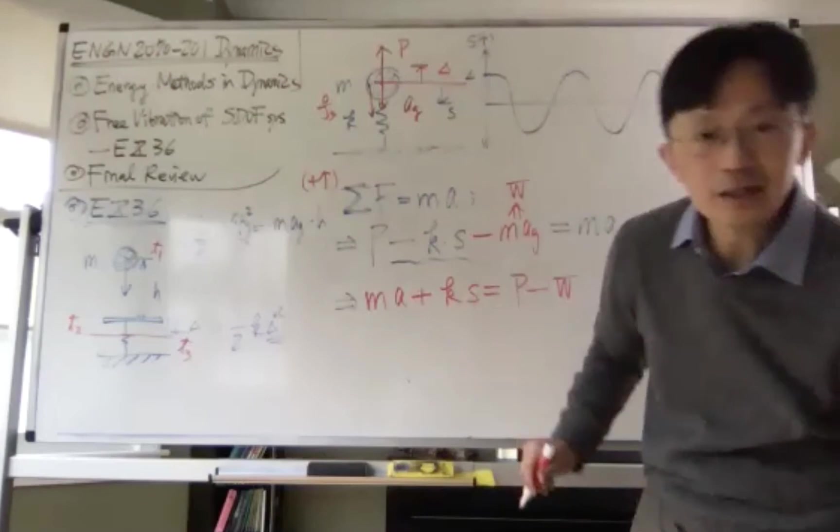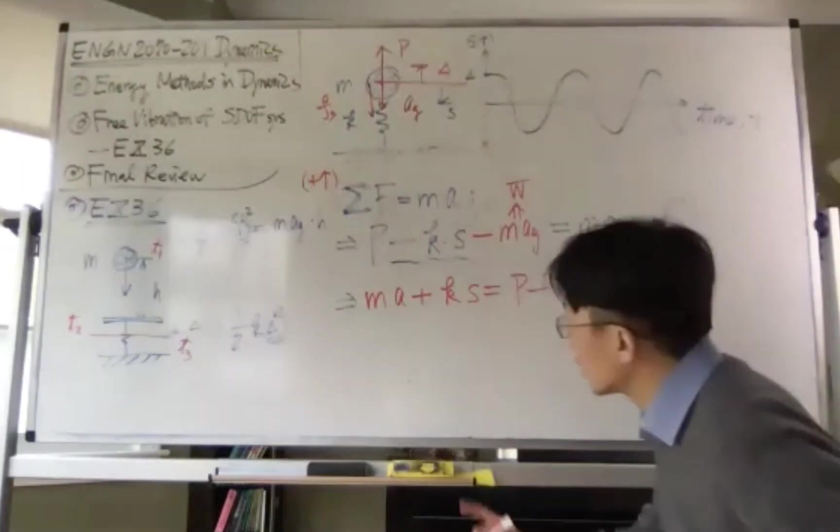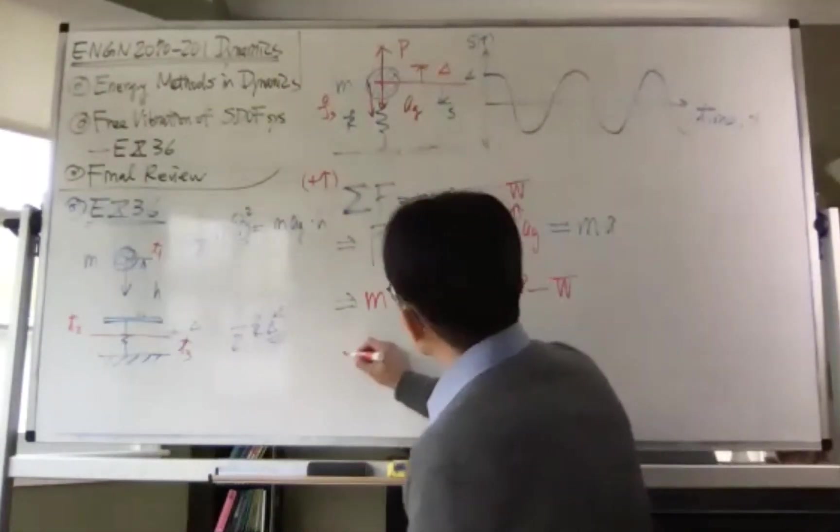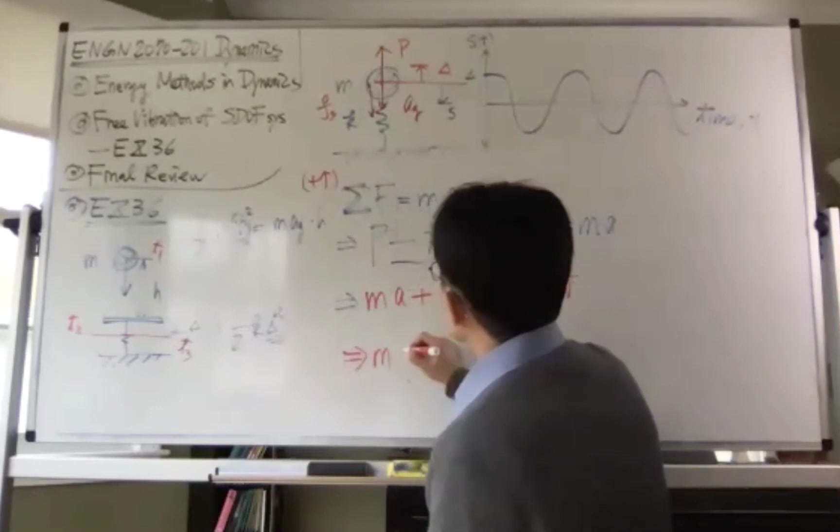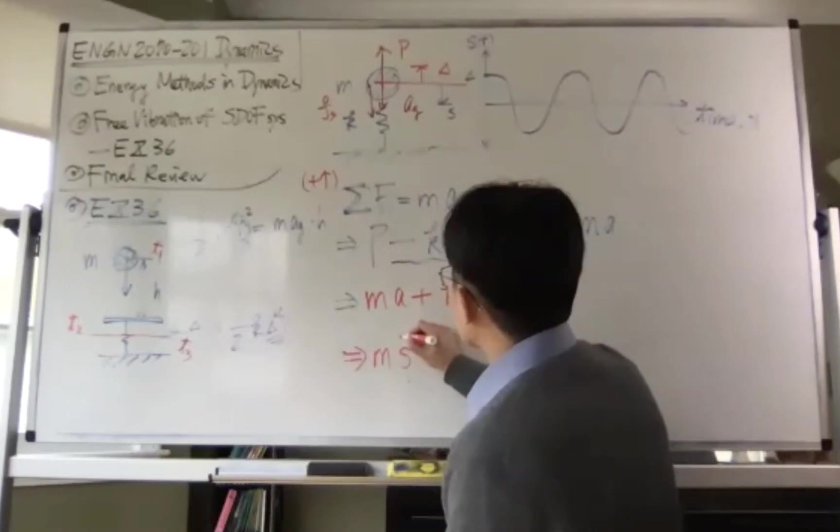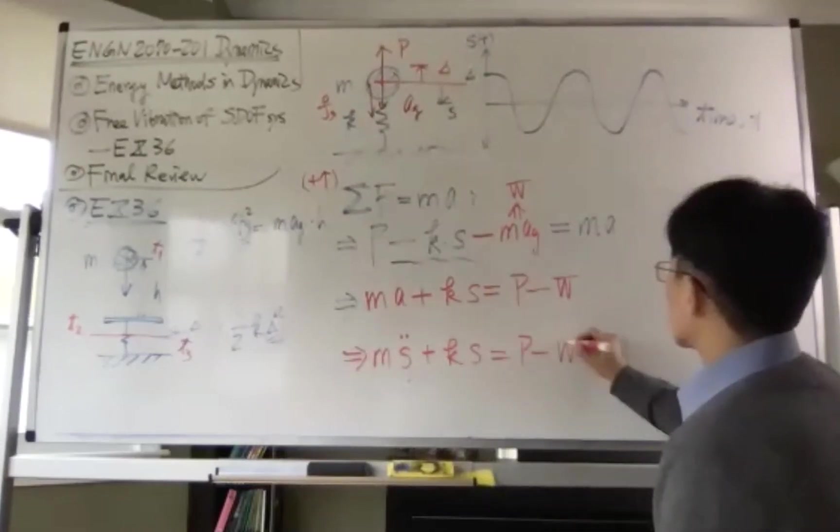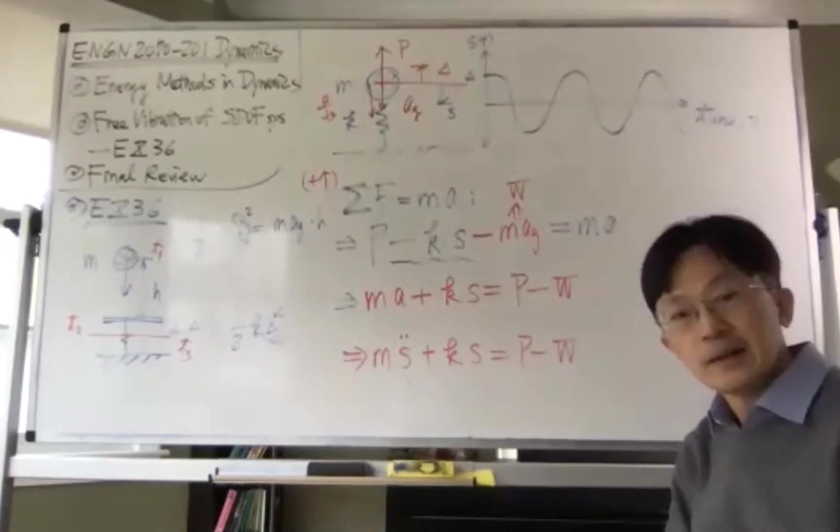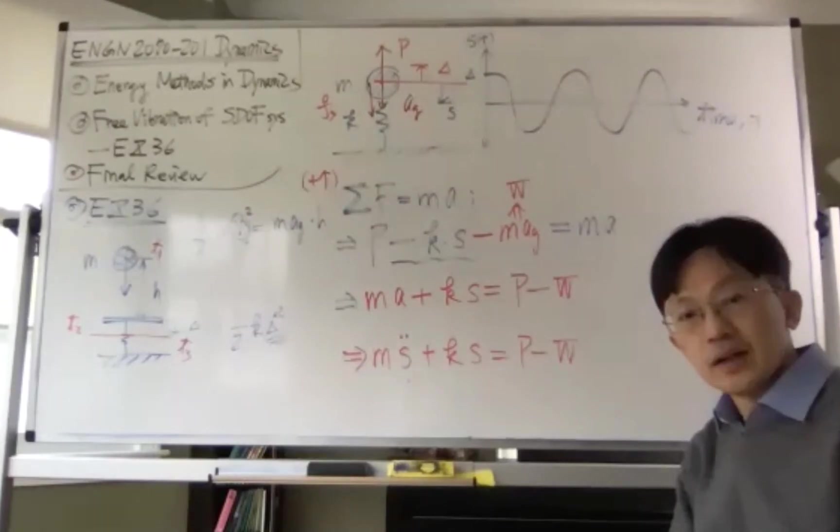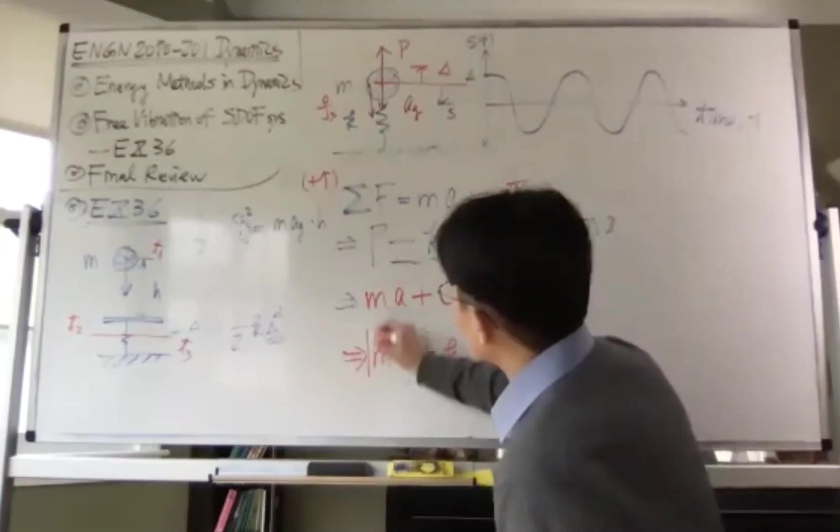Now what is A here? A is nothing but the second-order derivative of S. So can I say that this actually equals to M times S double dot plus K times S equals to P minus W. Right? So this is the governing equation.